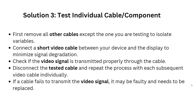Solution 3: Test individual cable components. First, remove all cables except the one you are testing to isolate variables. Connect a short video cable between your device and the display to minimize signal degradation. Check if the video signal is transmitted properly, then disconnect and repeat the process with each subsequent video cable individually. If a cable fails to transmit the video signal, it may be faulty and needs to be replaced.